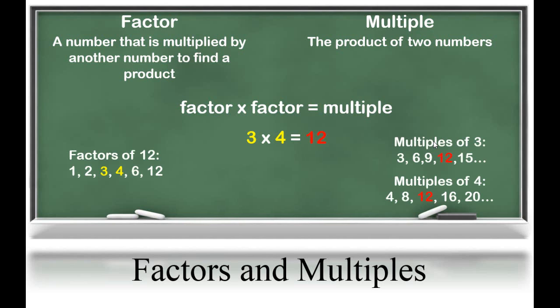Now we know that 12 has other factors: 1, 2, 6, and 12. And 3 has many multiples: 3, 6, 9, 12, 15, and so on. Same with 4. Students should see that the difference between factors and multiples is that factors divide a number into its parts, whereas multiples extend the pattern of skip counting by that number. Students will use an understanding of factors and multiples to solve real-world problems, as well as create equivalent fractions and write fractions in their simplest form in a later unit.